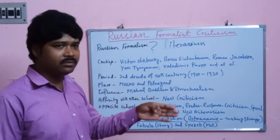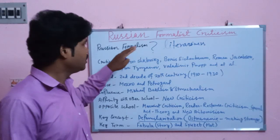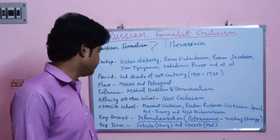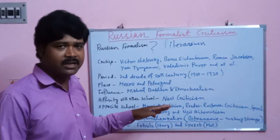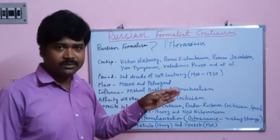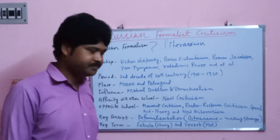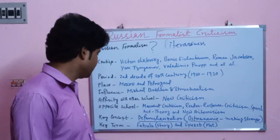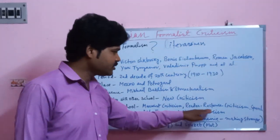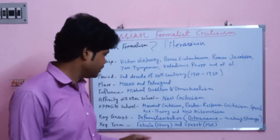Regarding influence, the schools or theories influenced by Russian Formalism include the Prague School, Bakhtin's school, and Structuralism. In terms of affinity — schools with a similar approach to literature — Russian Formalism shares similarity with New Criticism. The opposite schools of Russian Formalism are Marxist criticism, reader-response criticism, speech act theory. The key concept of Russian Formalism is defamiliarization.